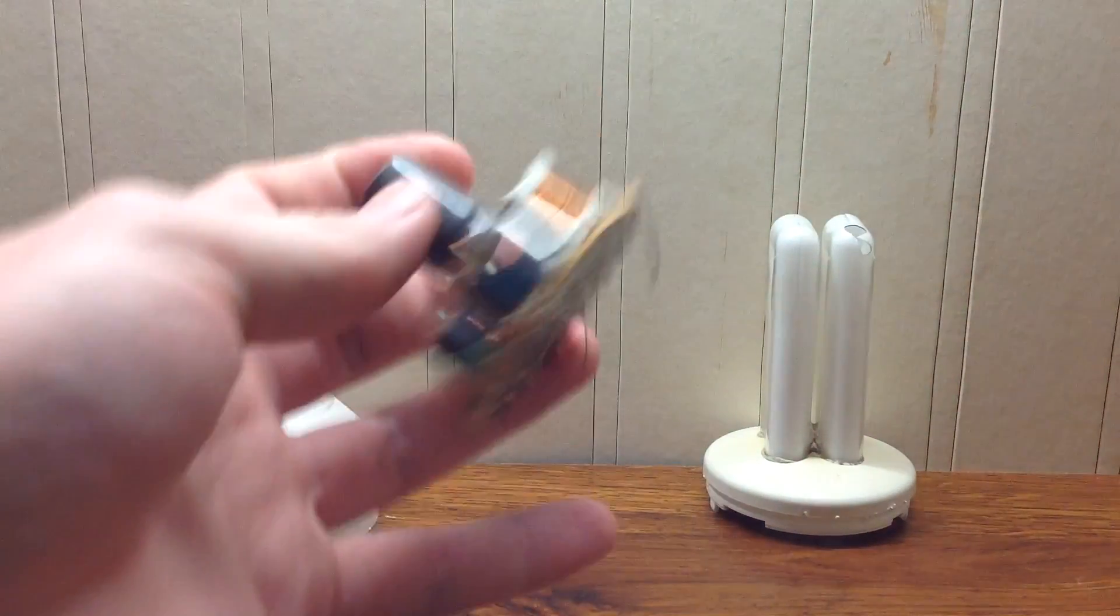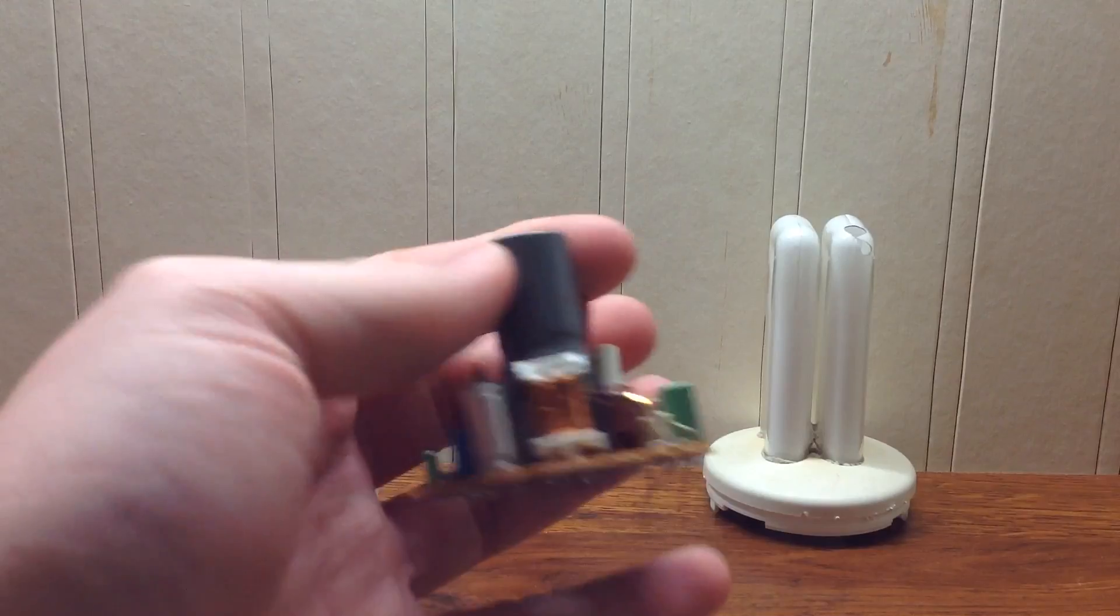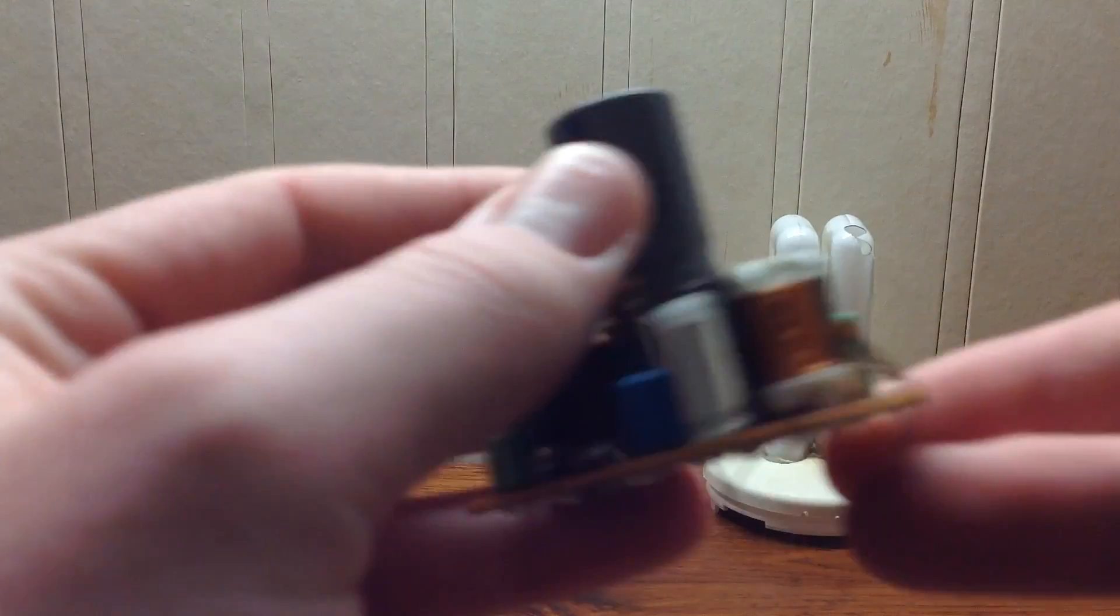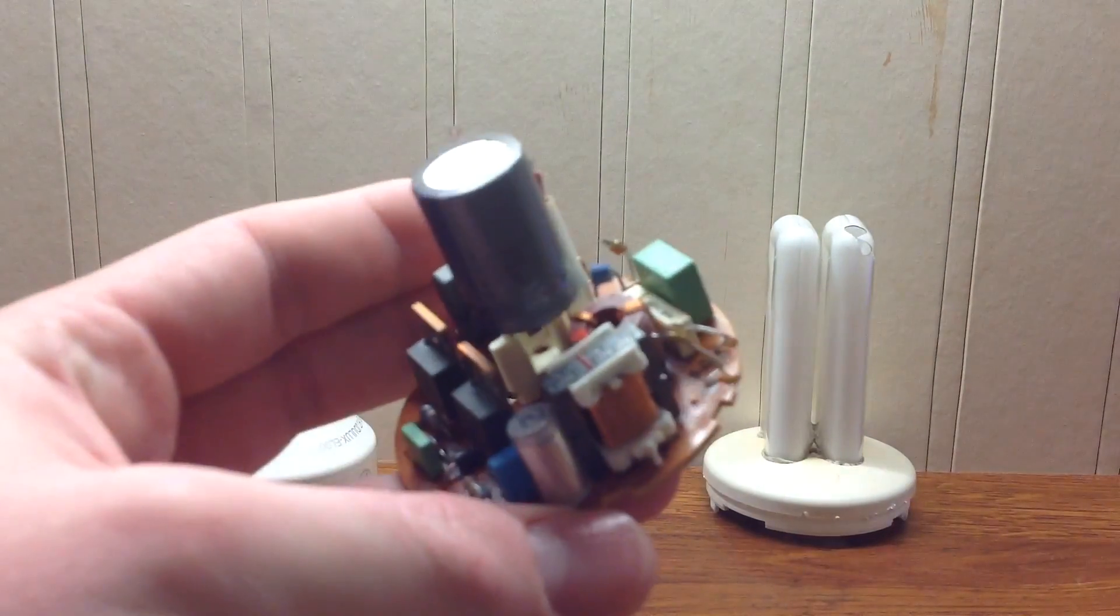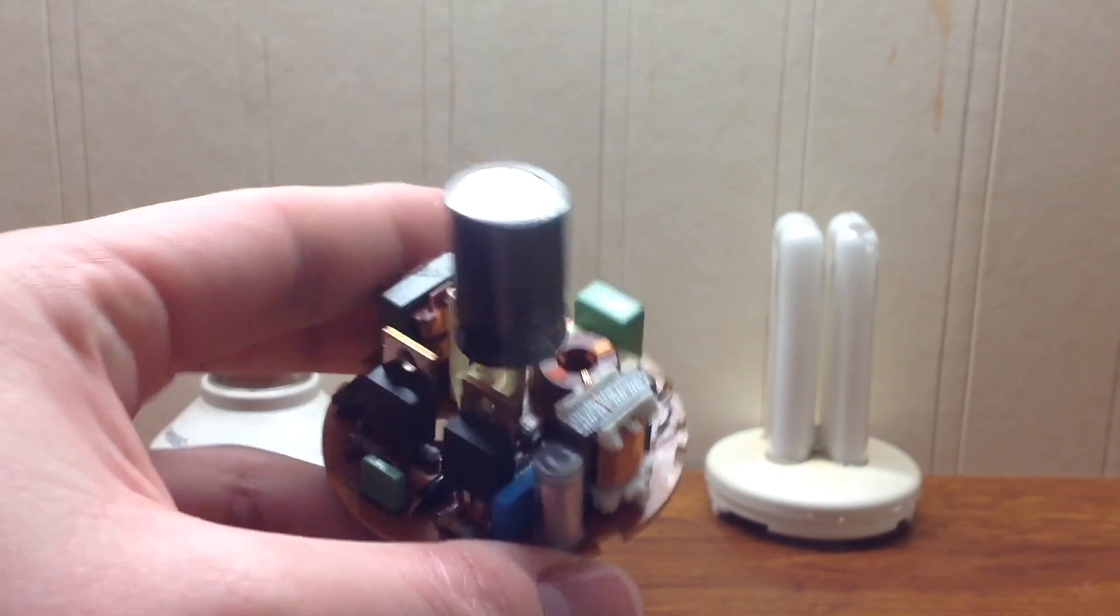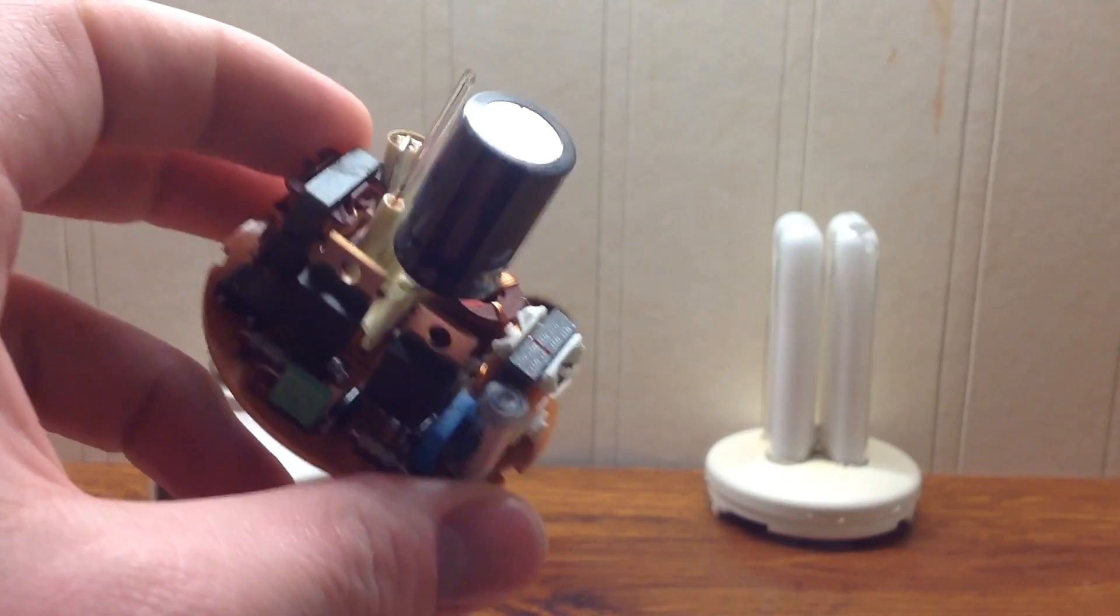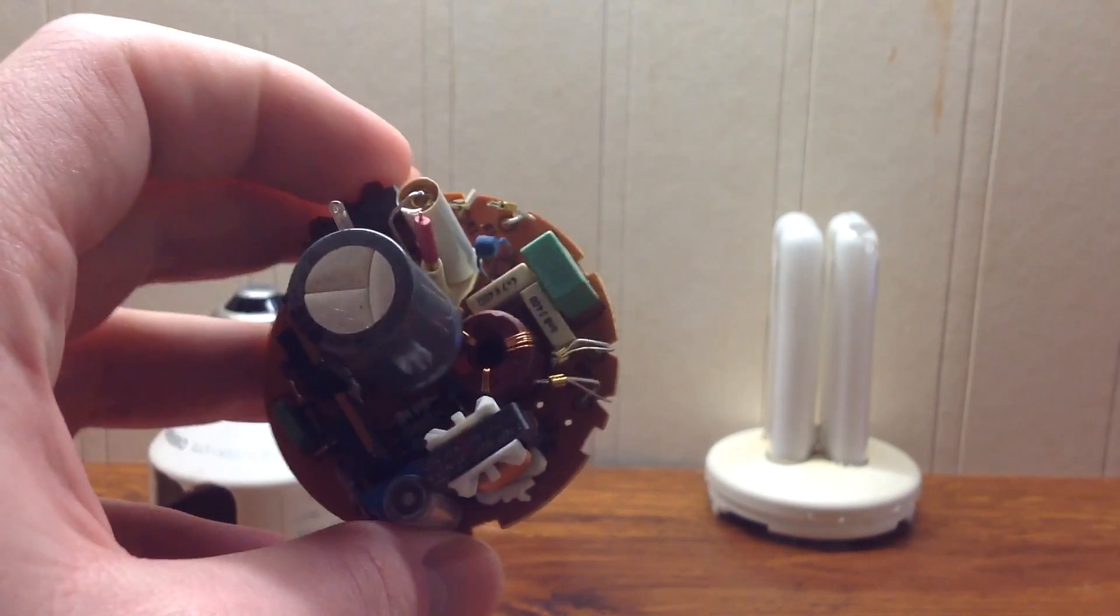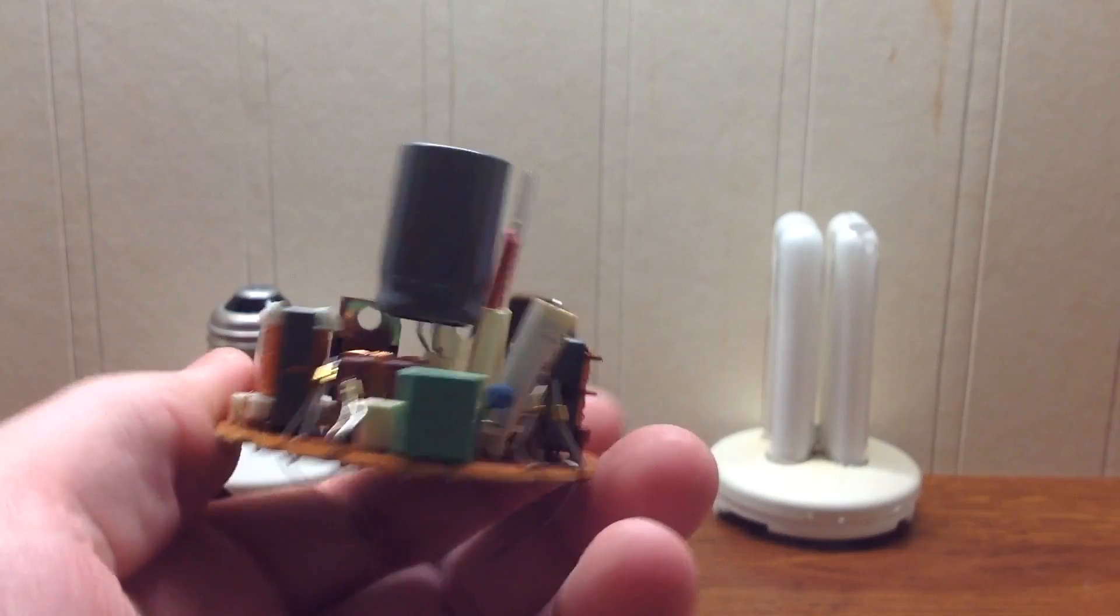And of course, this is the ballast. It's very interesting seeing all the different components in here, compared to the CFLs of today, which don't really have this many little components.